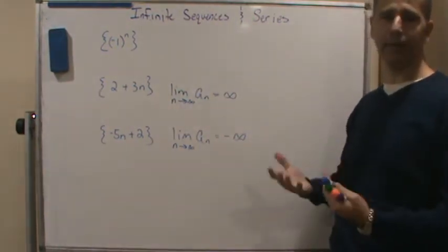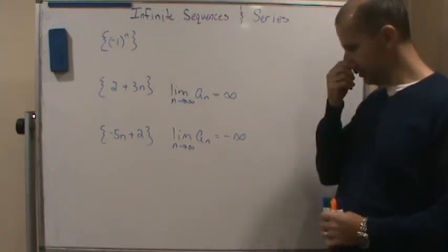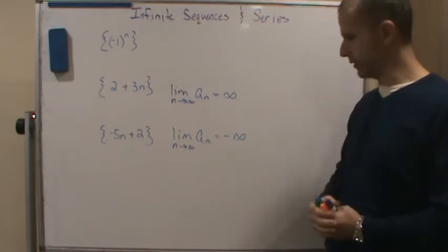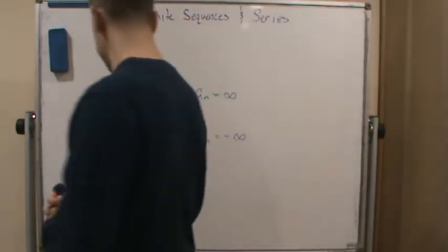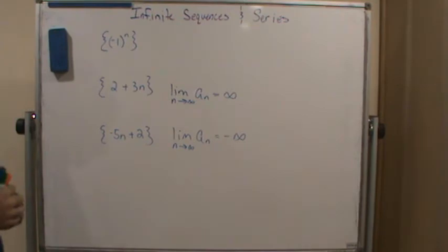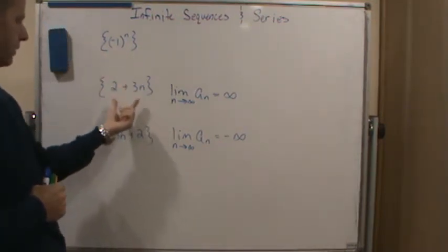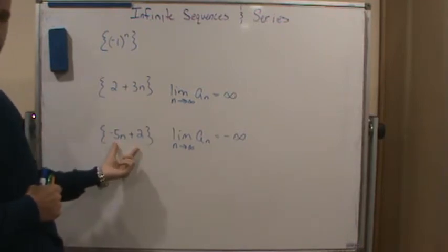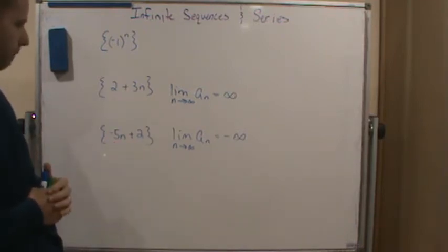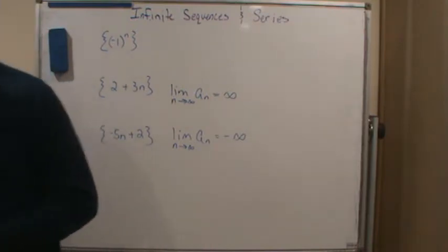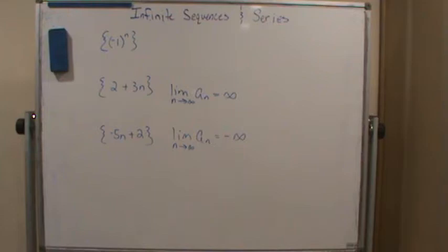I keep saying 'series' but I mean 'sequence' for right now. So we have a divergent sequence, a divergent sequence, and another divergent sequence — but they are divergent for different reasons.